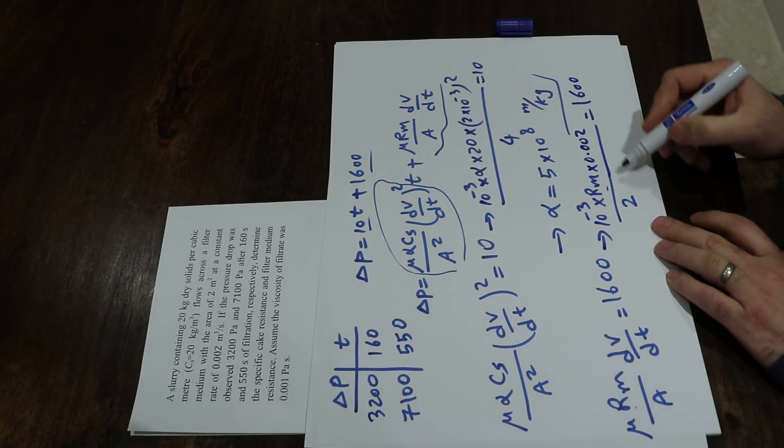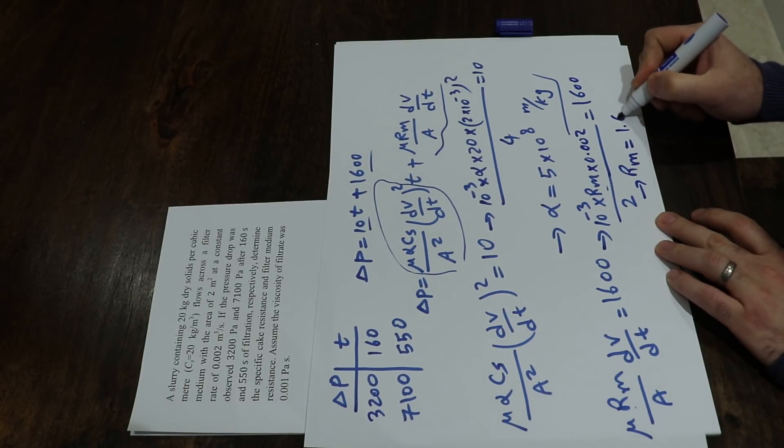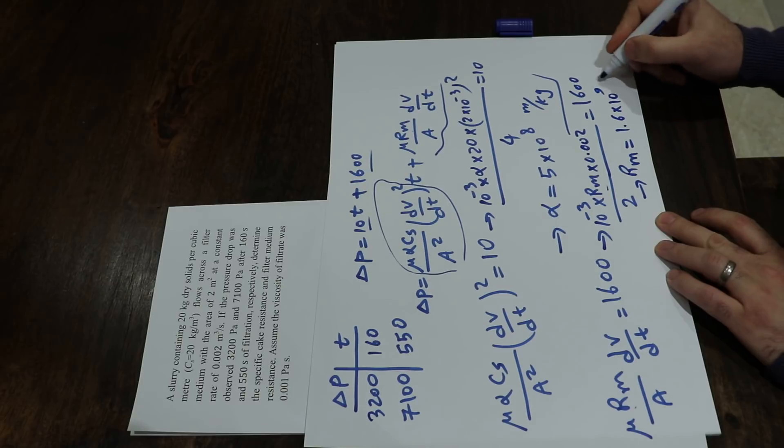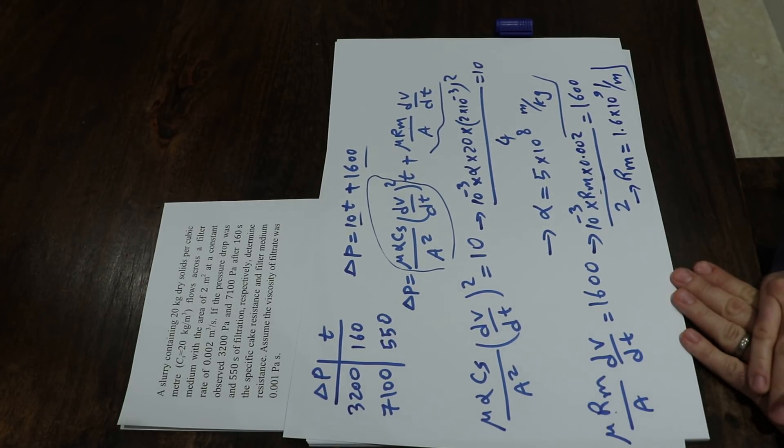Therefore, from this equation, you can calculate Rm equal to 1.6 times 10 to the power of 9 per meter. And that is basically the solution to this question.